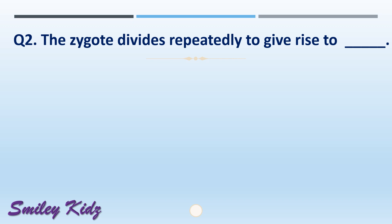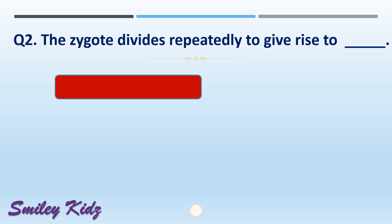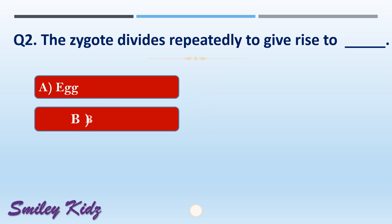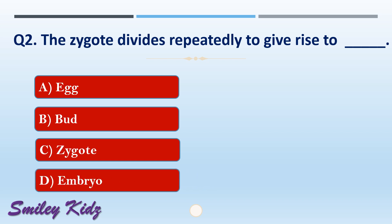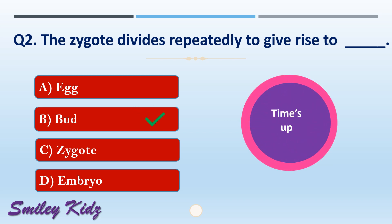Question number two: the zygote divides repeatedly to give rise to dash. The options are: A) egg, B) bud, C) zygote, or D) embryo. The right answer is option D, embryo. The zygote divides repeatedly to give rise to an embryo.